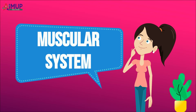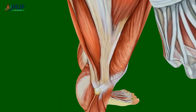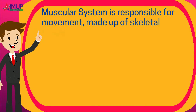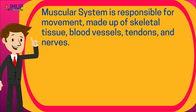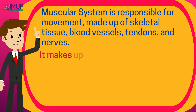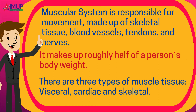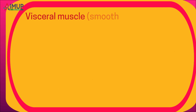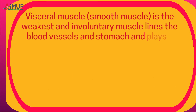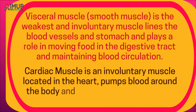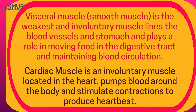The muscular system is responsible for movement, made up of skeletal tissue, blood vessels, tendons, and nerves. It makes up roughly half of a person's body weight. There are three types of muscle tissue: visceral, cardiac, and skeletal. Visceral muscle, or smooth muscle, is the weakest and involuntary muscle; it lines the blood vessels and stomach and plays a role in moving food in the digestive tract and maintaining blood circulation. Cardiac muscle is an involuntary muscle located in the heart that pumps blood around the body and stimulates contractions to produce heartbeat.